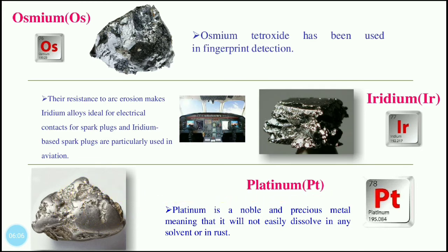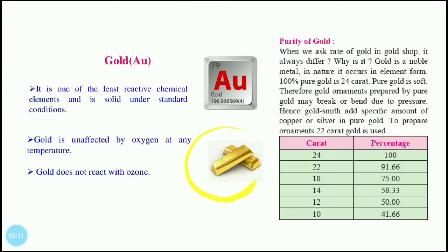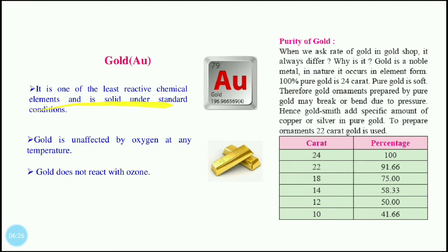Gold is the most noble of the noble metals. It is one of the least reactive chemical elements, solid under standard conditions, and is unaffected by oxygen at any temperature. Gold does not react with ozone either. Common uses include gold rings, chains, and other jewelry.